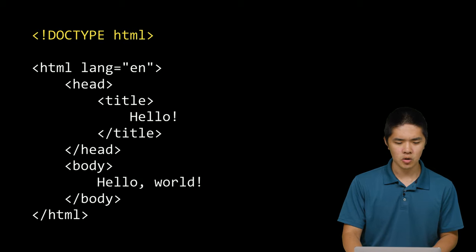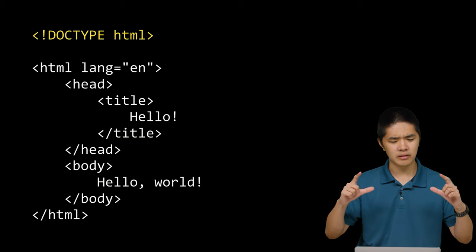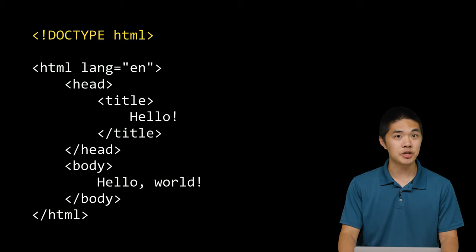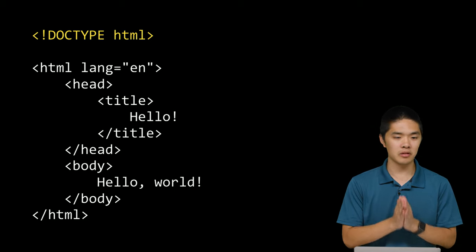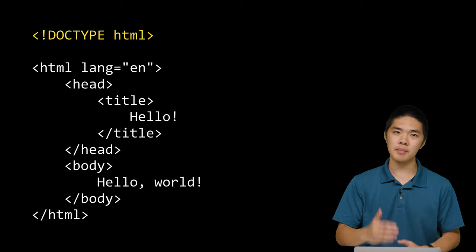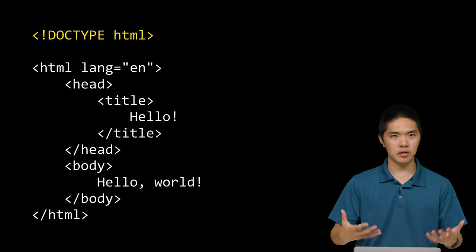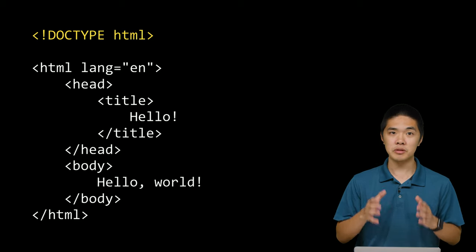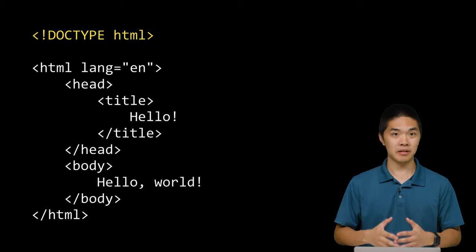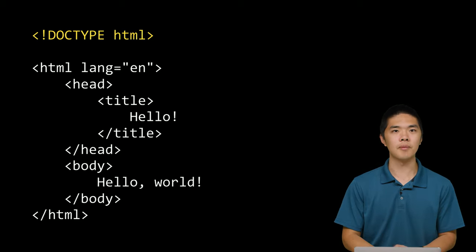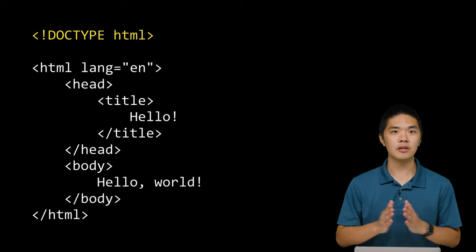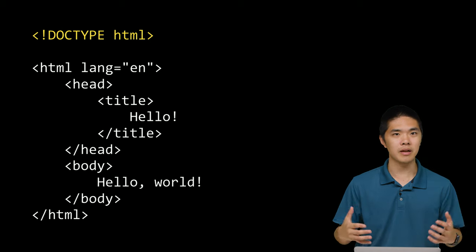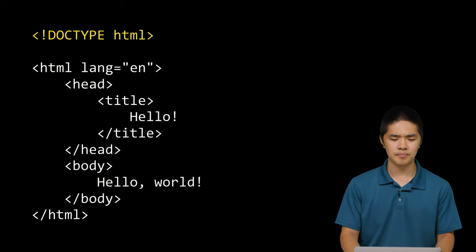We start at the top with this line. In angled brackets, we have exclamation point DOCTYPE HTML. This line goes at the beginning of every HTML file as a signal to the web browser interpreting that file that this particular file is an HTML file — specifically using HTML5, the latest version of HTML. So it's a signal of what language this text file is written in.